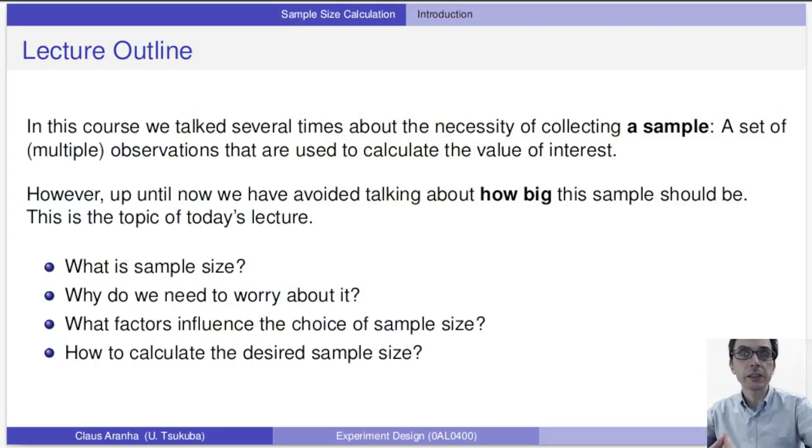So in this course up to now we talked several times about the necessity of collecting a sample, a sample which is a set of multiple observations that are used to calculate the value of interest for the experiment. However, up to now we have avoided talking about how many samples we need, how big should be the size of the sample. That will be the topic for today's lecture. So what we want to think about is what is a sample size, why do we need to worry about it, and how to choose and calculate this value.